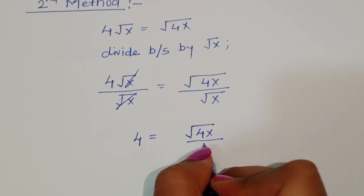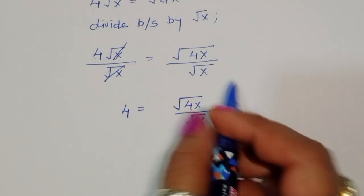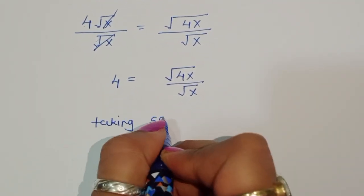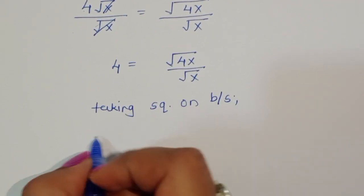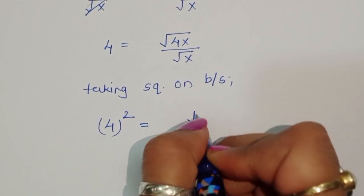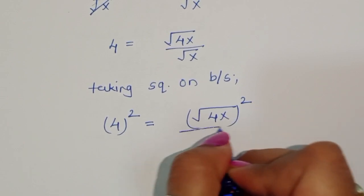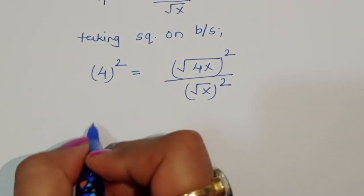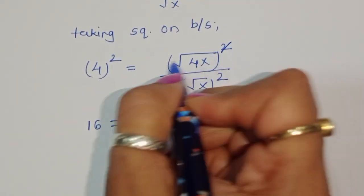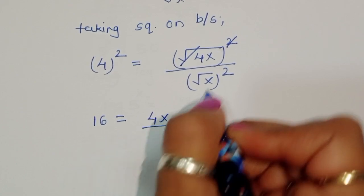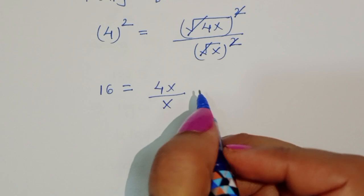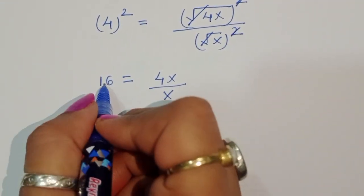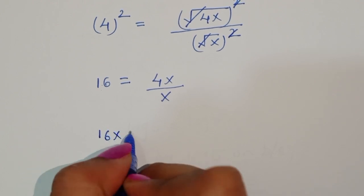Now taking square on both sides to cancel the square roots: 4² is equal to (√(4x))² divided by (√x)². That gives 16 is equal to 4x divided by x. Doing cross multiplication: 16x is equal to 4x.